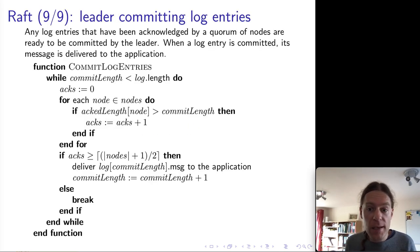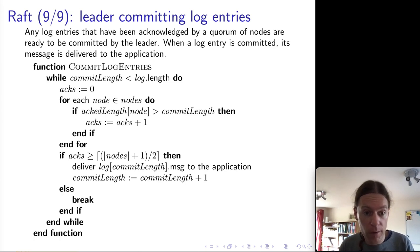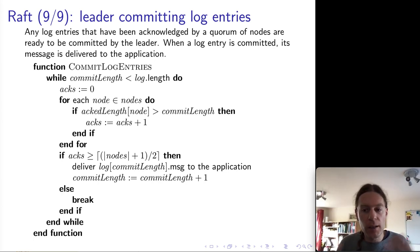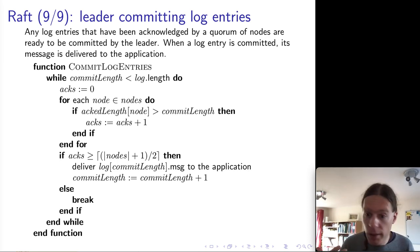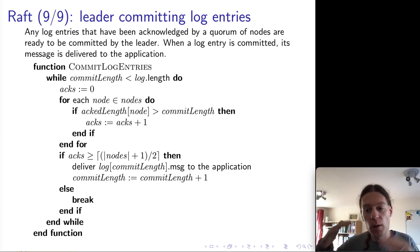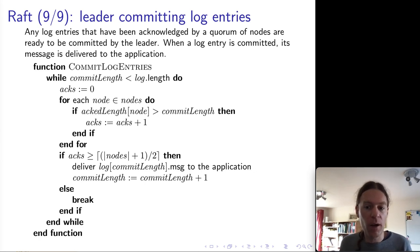And that's it — that is the entirety of the Raft consensus algorithm. I know it's a huge amount of detail, but it's really interesting to see that interplay between the leaders and the followers, always having to check the term number. By very carefully sequencing all of these things, it is possible to actually achieve something like total order broadcast. That's all for this lecture.